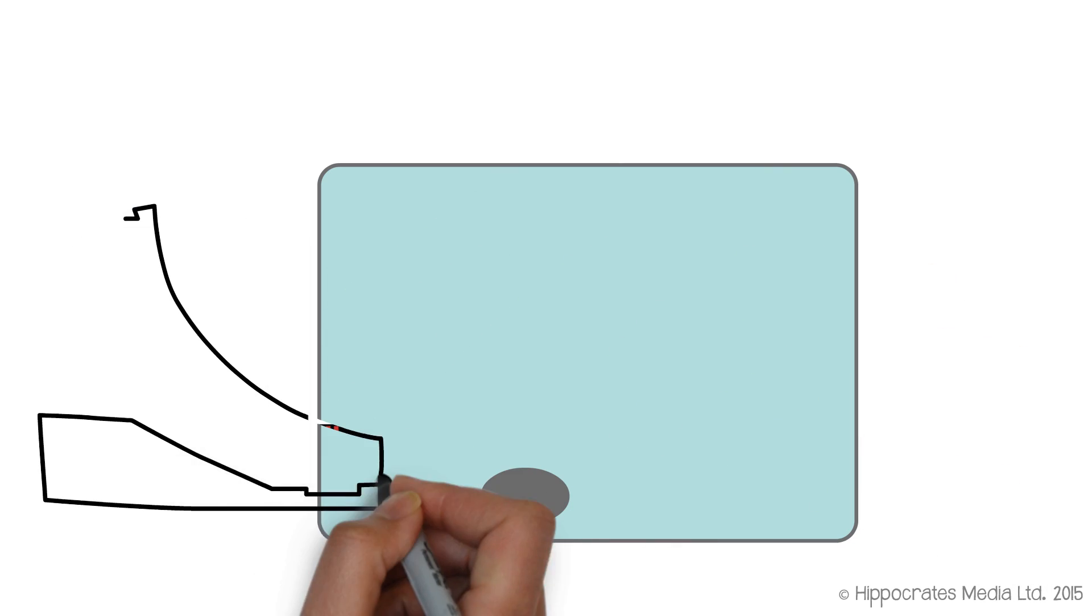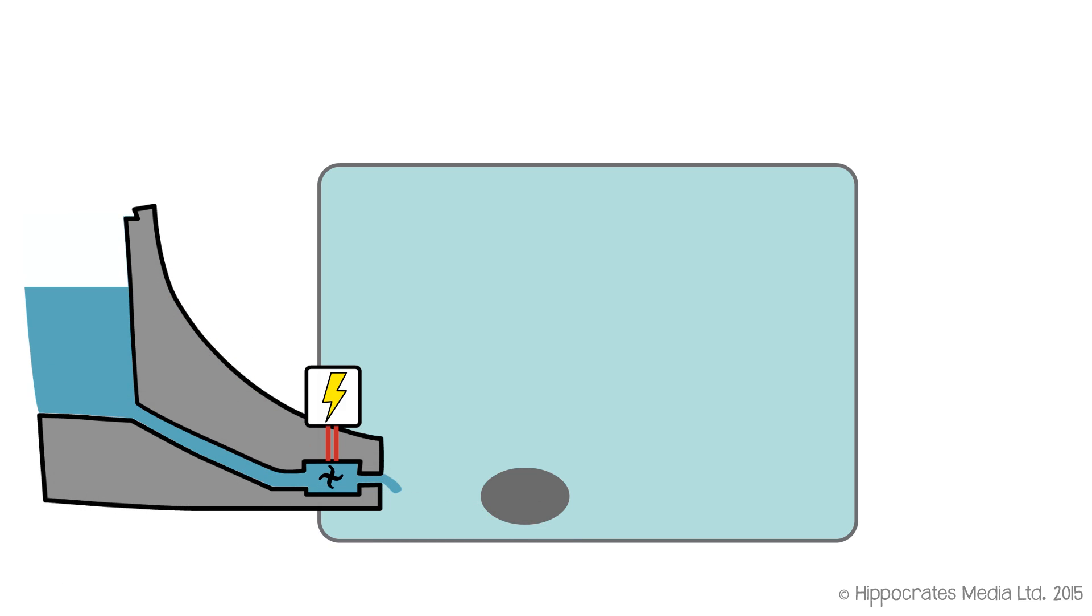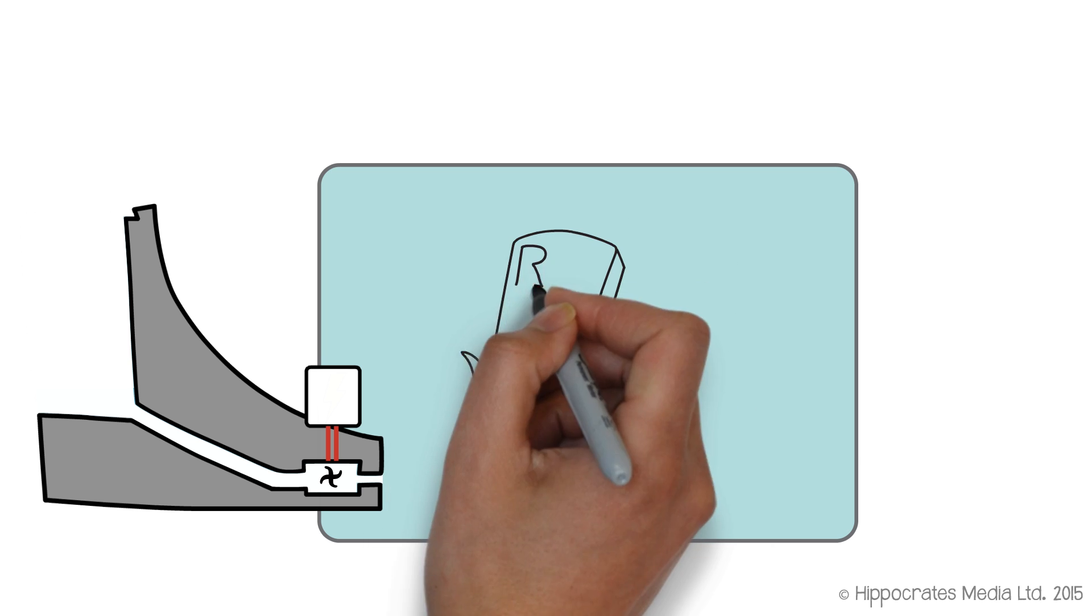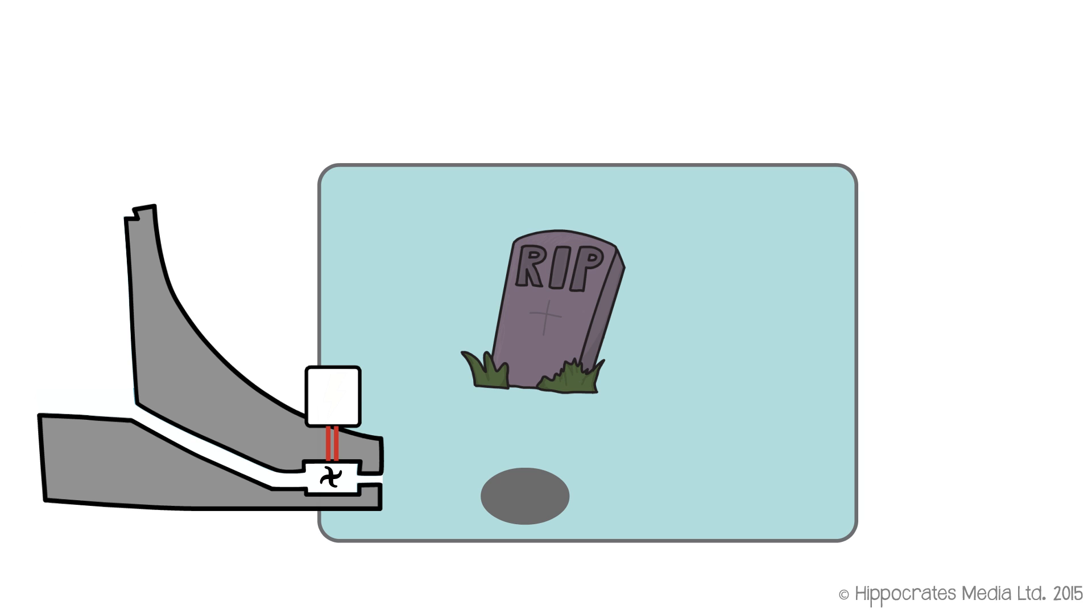If you imagine your hydroelectric dam, yes, you can allow some water out of it, you can generate electricity, but eventually the dam, the reservoir, will run empty. The water will all be gone, and at that point, you can't achieve anything useful. From a cell's point of view, that would effectively be the cell dying. That would be the end of your cell. So the hydroelectric dam company needs a way of topping up the water levels in the dam, so you can continue to generate your electricity.